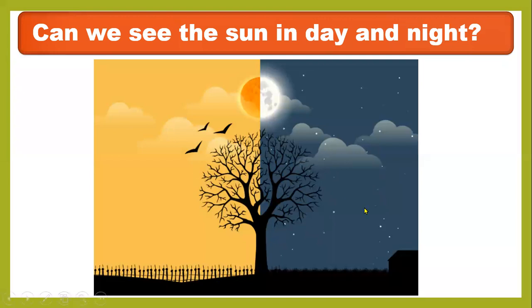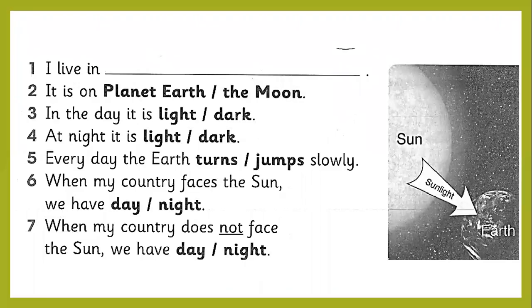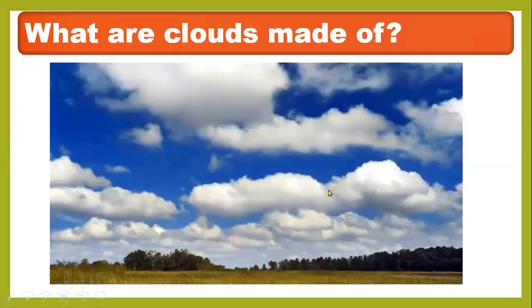So here is the day and here is the night. As you can see, there is a sun and clouds in the daytime, and moon and stars in the night time. What are clouds made of? The clouds are made of tiny drops of water. From clouds we get rain or snow.